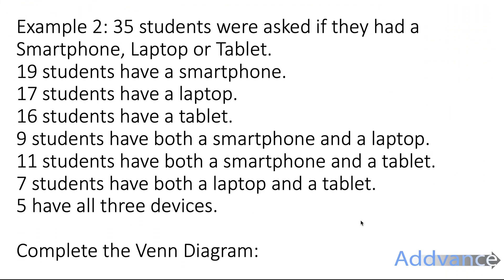Now example two. This one's a bit more complicated. It says 35 students were asked if they had a smartphone, laptop or a tablet. 19 students have a smartphone. 17 students have a laptop. 16 students have a tablet. 9 students have both a smartphone and a laptop. 11 students have both a smartphone and a tablet. 7 students have both a laptop and a tablet. 5 have all 3 devices. Complete the Venn diagram.